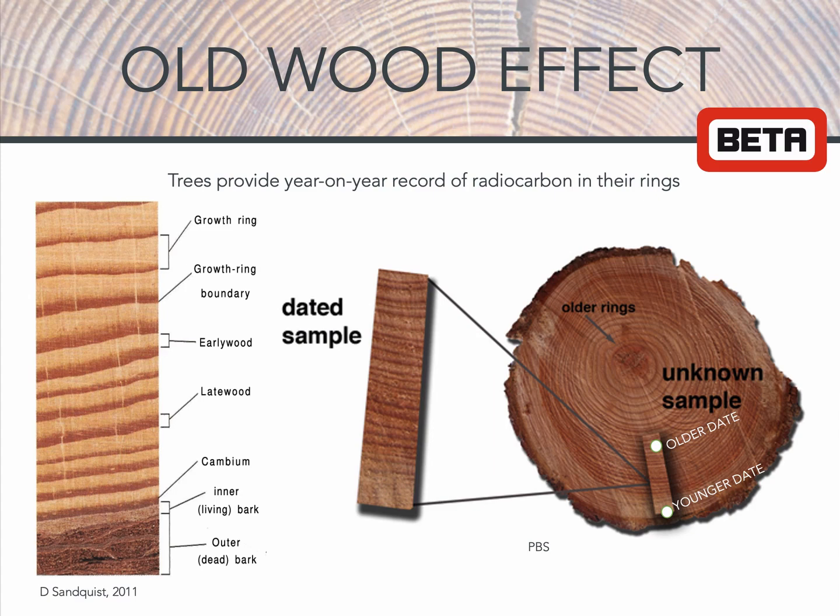For example, you would expect a smaller delta between date ranges from the center to the bark for a young tree compared to an older tree. As a result, any charcoal or wood sample that is radiocarbon dated will have an apparent age, which may result in errors of up to hundreds of years, unless shorter-lived tree species or twigs are selected for radiocarbon dating.